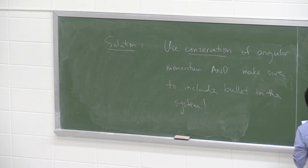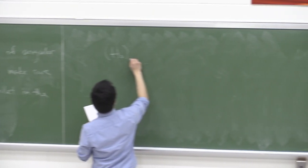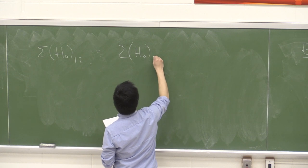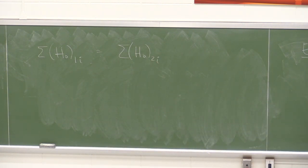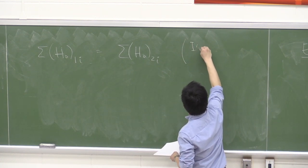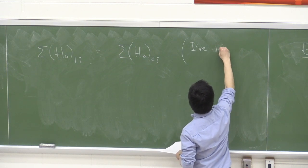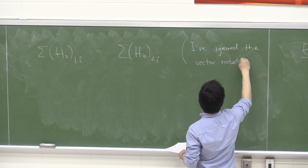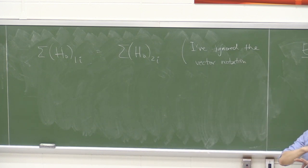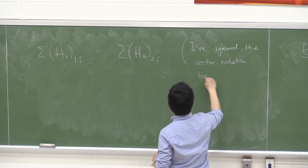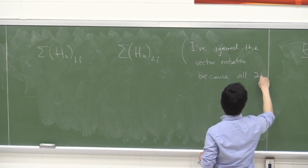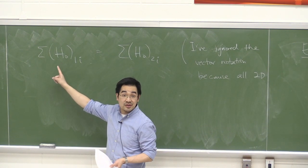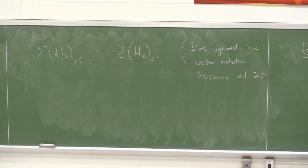So we write: sum of H_O1 for all i equals sum of H_O2 for all i. I've dropped the vector notation because the whole problem is 2D, so the axis of rotation points in the k direction, and all quantities are scalars in that direction.